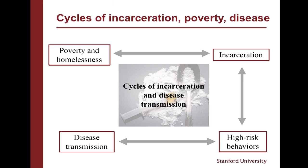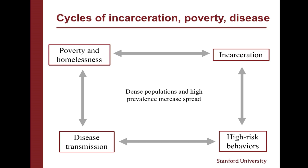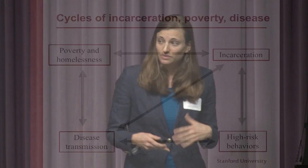This results in substantial health setbacks, personal setbacks, and employment setbacks, making it that much more likely that individuals leaving the system will fall into states of poverty and homelessness, which again increases their risk of becoming incarcerated. Although these diseases can incubate in the injecting population, it's very easy for them to spread to other marginalized members of society and then to the broader population as a whole. Even within the incarceration system, because you have dense populations, very high prevalence, and frequent turnover, you can get increased spread even within the walls of a prison or jail itself.